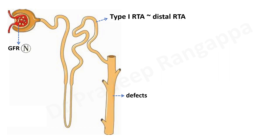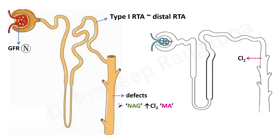Any intensivist who sees high chloride in someone with acidosis should keep this in mind. It will be a normal anion gap acidosis with hyperchloremic metabolic acidosis, because chloride reabsorption happens in the collecting tubules. In type 1 RTA, there is increased chloride reabsorption from the DCT and collecting tubule.